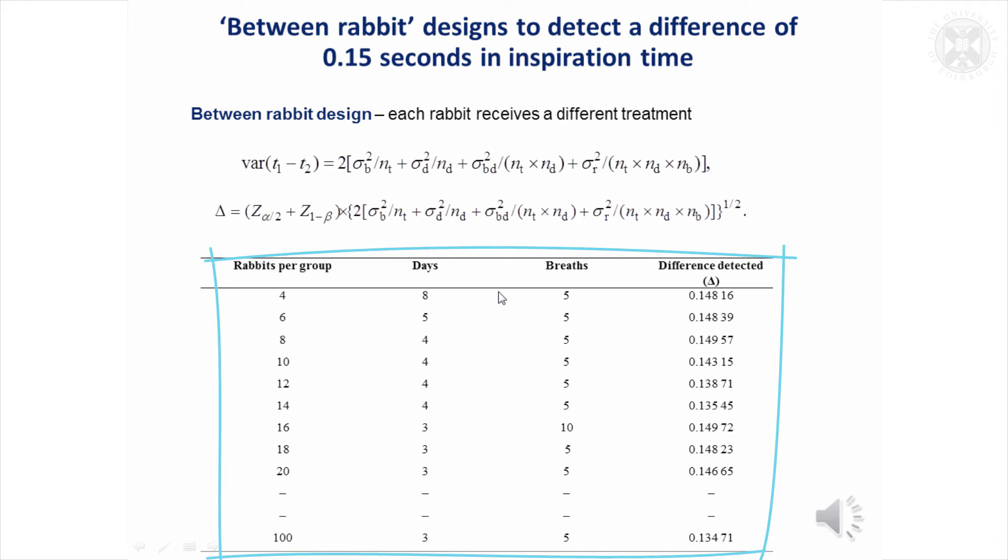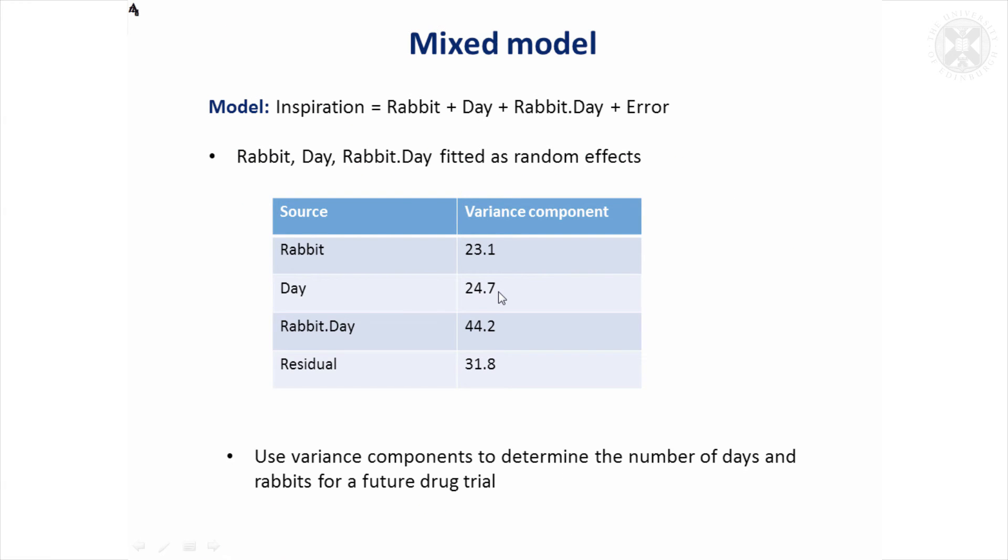The alternative would be to use more rabbits and fewer days. But it seemed to be impossible to get the number of days down to less than three because there is quite a lot of variability in the rabbit variation from day to day. We can't avoid that, so there's no way we could just do the study on one day and draw satisfactory conclusions.